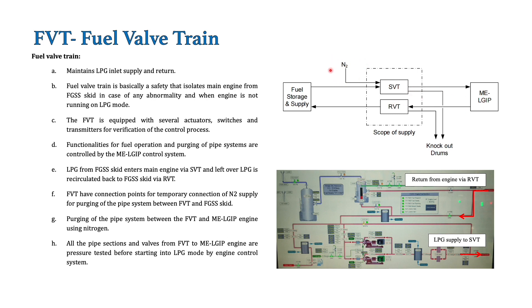This purging is carried out automatically. If the system is stopped and maintenance needs to be carried out, nitrogen can also be used as a purging medium via temporary connections for nitrogen supply in the fuel wall train. With those connections, we can purge the relevant portion of the system to carry out maintenance. So when the main engine changes over from secondary fuel to primary fuel, the fuel wall train isolates the fuel gas supply system and nitrogen pushes the leftover LPG back through the return line to the catch tank.